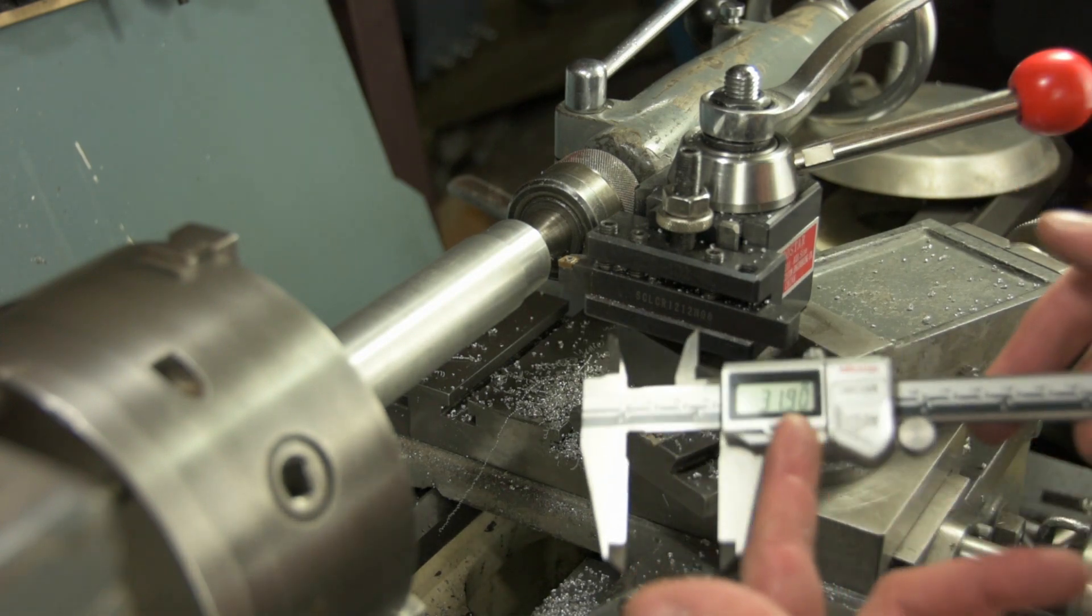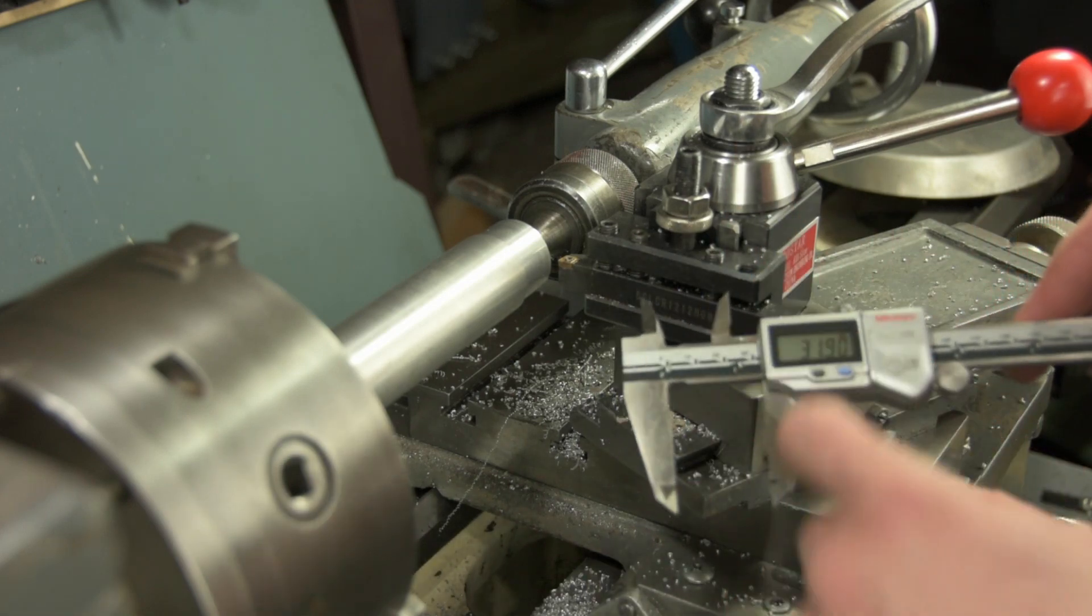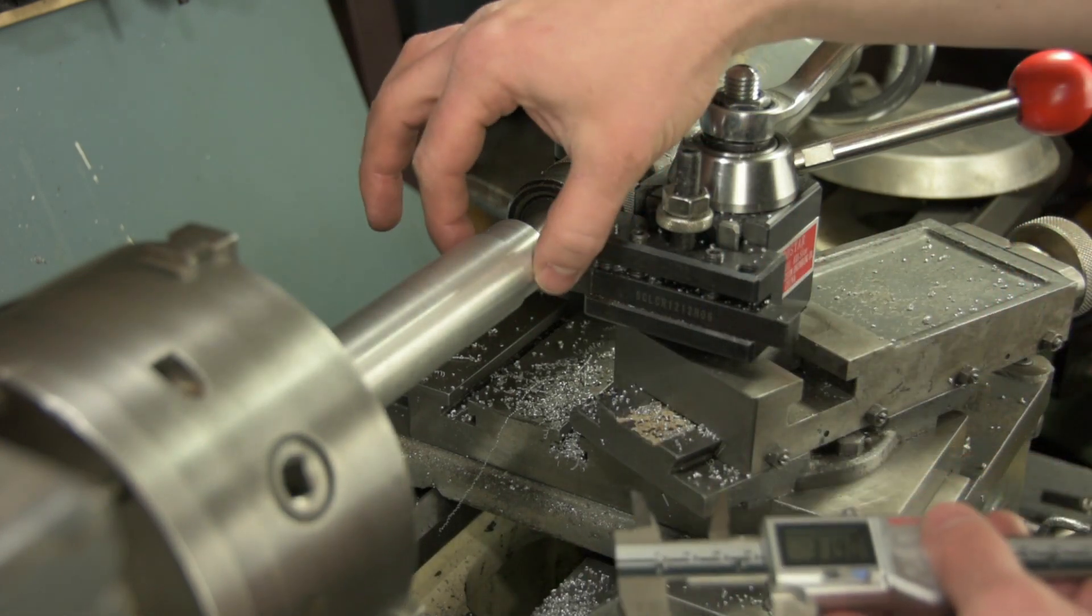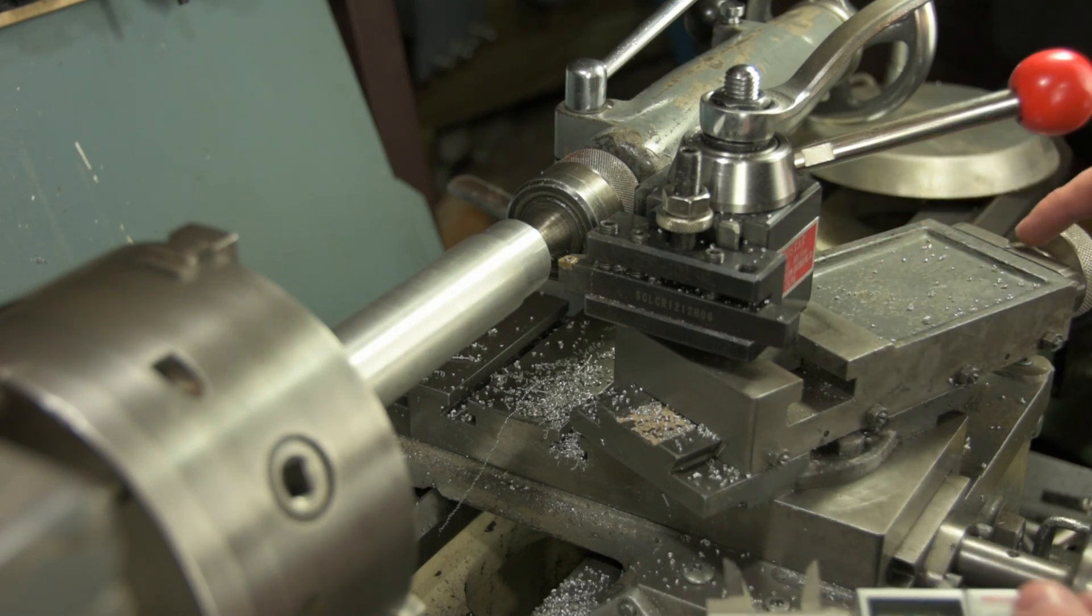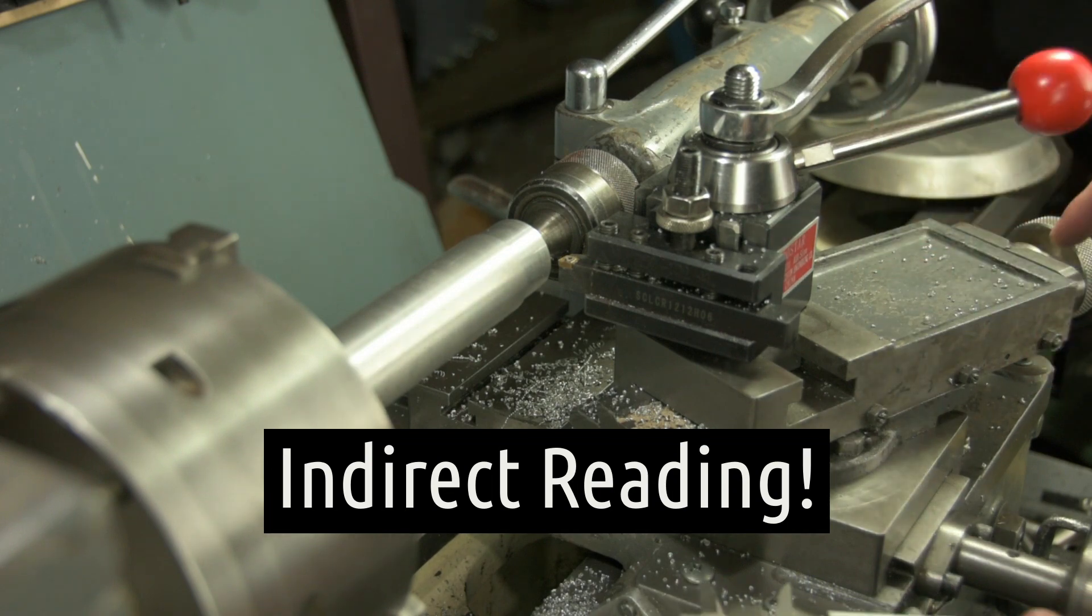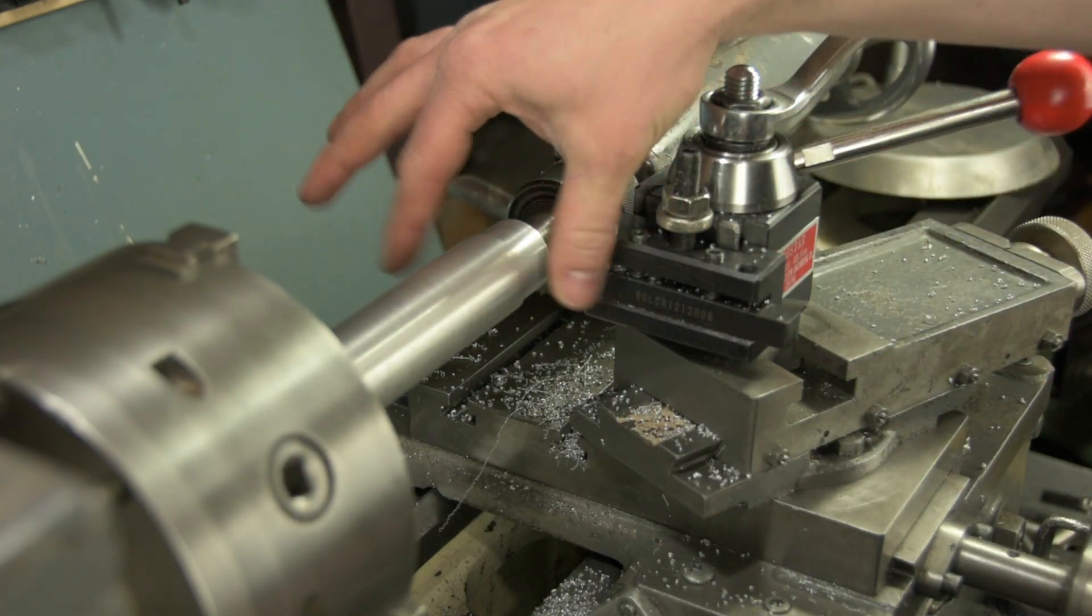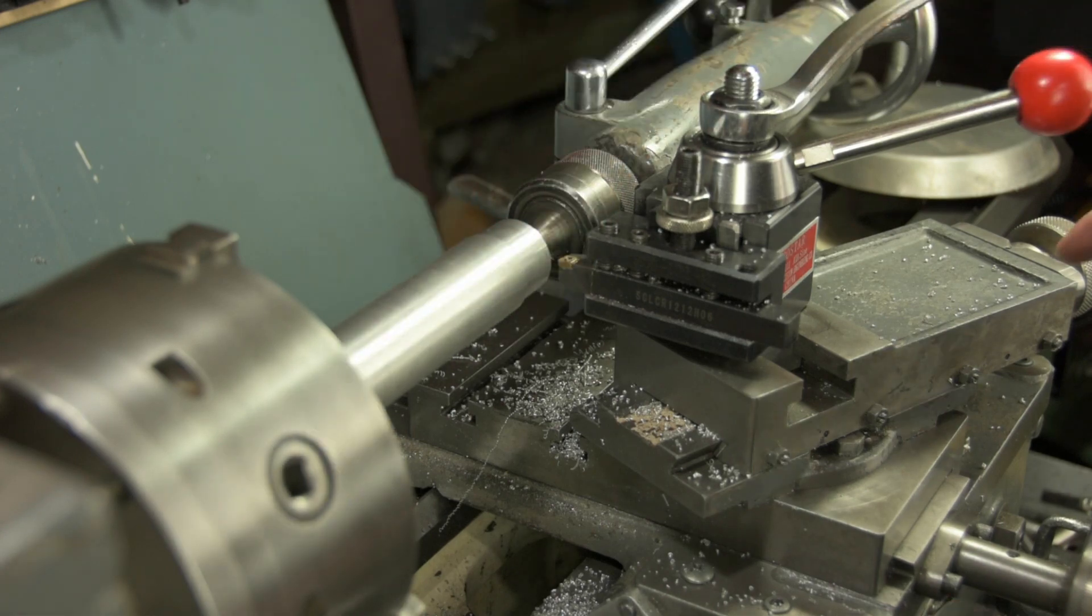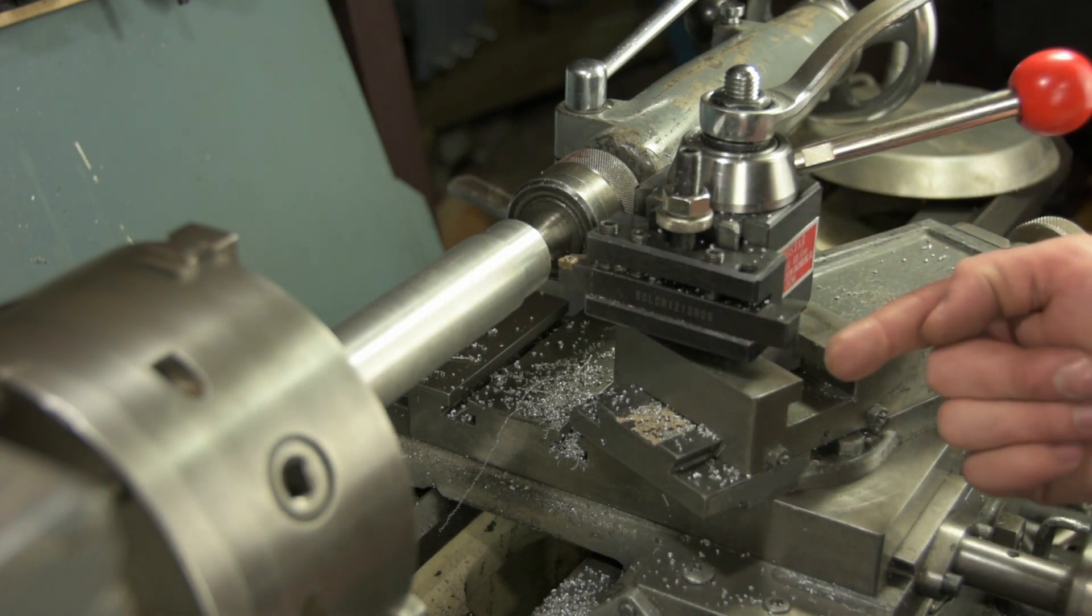So let's say we want to finish at 31 millimeters exactly. So we've got to take off 0.9 millimeters. And remember that this is direct reading, so it will take off the measurement that we ask it to, which will end up affecting this by double. So we need to tell this to move 0.45 millimeters that way. So I need to move it 45 thou that way.